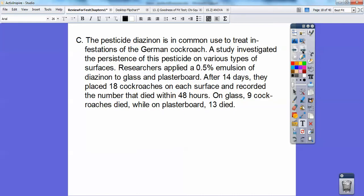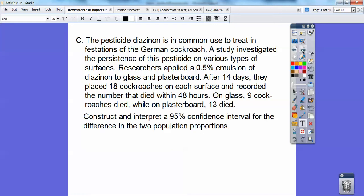The pesticide diazenon is in common use to treat infestation of the German cockroach. A study investigated the persistence of this pesticide on various types of surfaces. Researchers applied 0.5% emulsion of this pesticide to glass and plasterboard. So there are two surfaces. So after 14 days, they placed 18 cockroaches on each of these surfaces and recorded the number that died within 48 hours. So on the glass, 9 cockroaches died, while on the plasterboard, 13 cockroaches died.